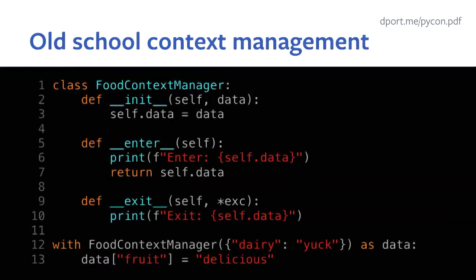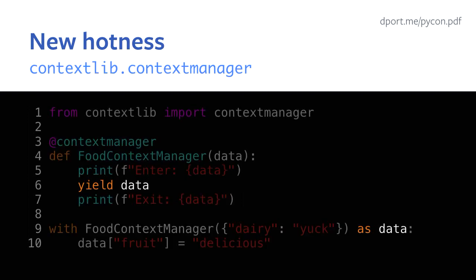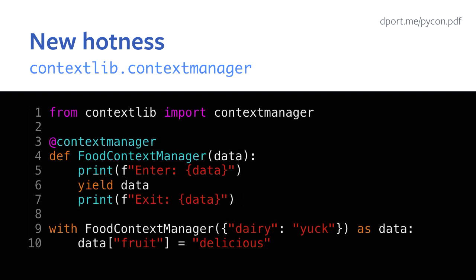Let's go back to our FoodContextManager. The function takes our variable as an argument, we print the data in it, yield the data, and then print the exit data. Whatever you yield is what you get after your 'as'. Here's how you initialize: when you enter and print, you'll see 'dairy' as the key, and when you exit, you'll get both 'dairy' and 'fruit' as keys.